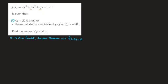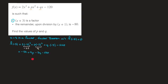Using the function, I can write that f of negative 3 equals 2 times negative 3 cubed plus p times negative 3 squared plus q times negative 3 minus 120. Using the fact that negative 3 cubed is negative 27 and negative 3 squared is 9, this turns into negative 54 plus 9p minus 3q minus 120.